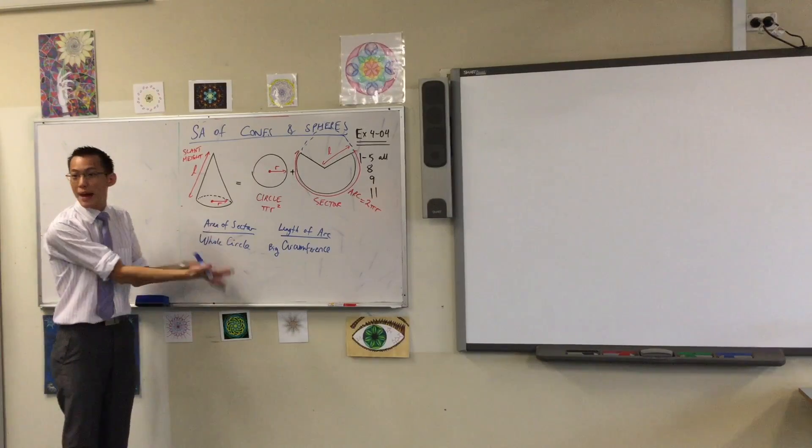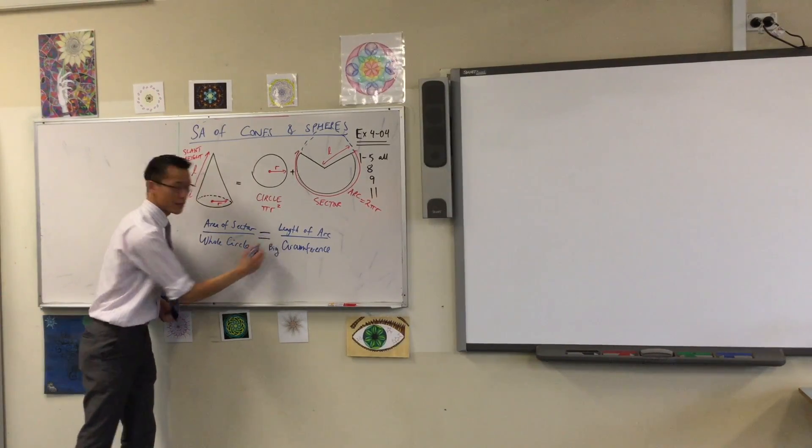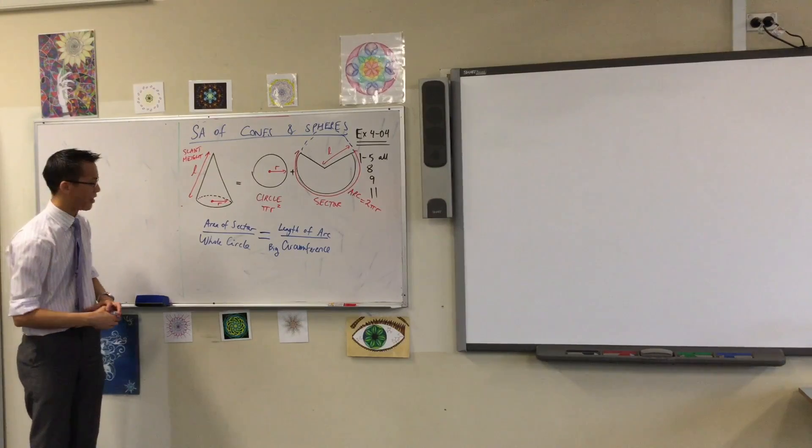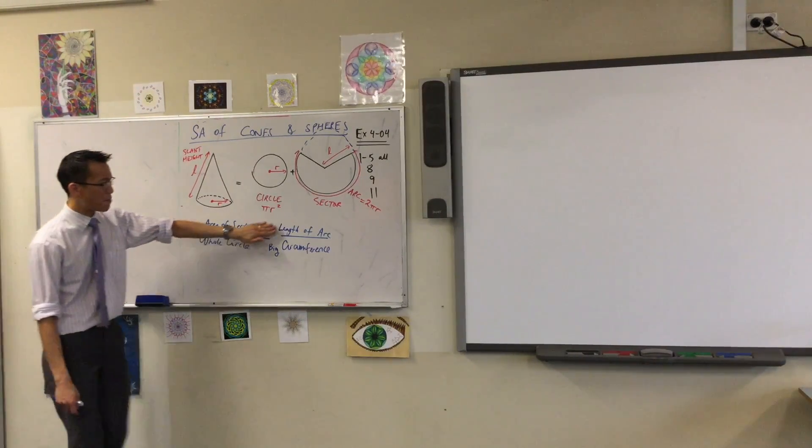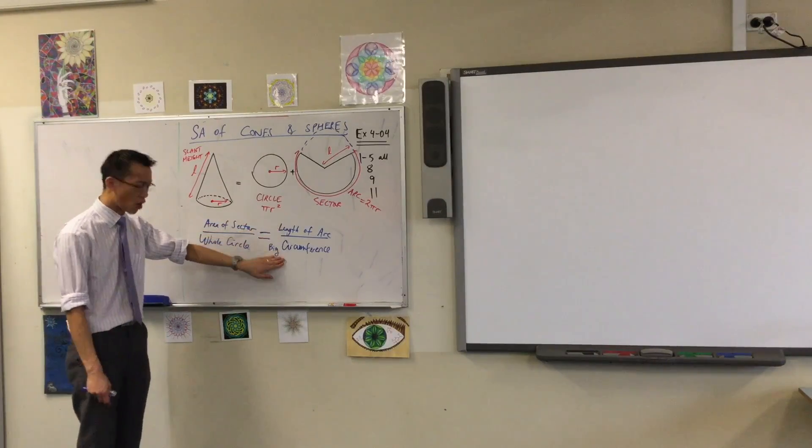Because we're talking about the same shapes, when you compare these, they're equal. We're comparing part of the area, the whole area, part of the circumference, the whole circumference.